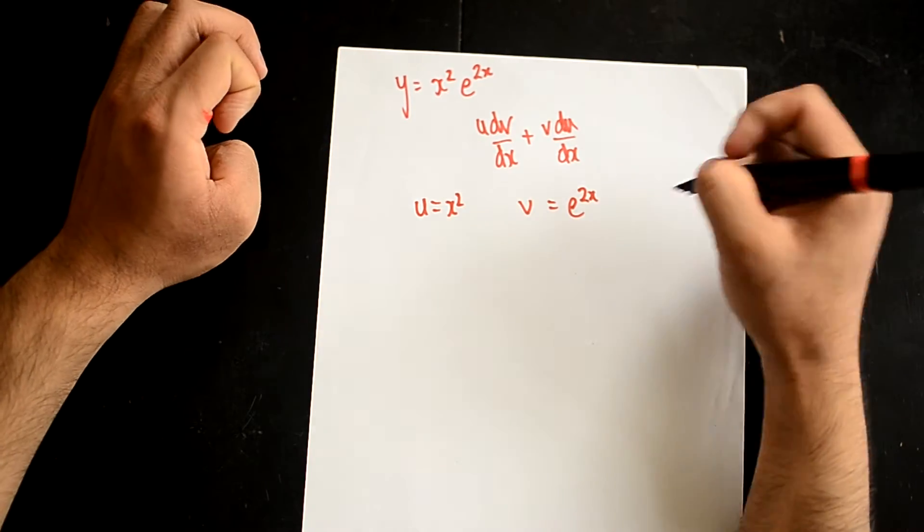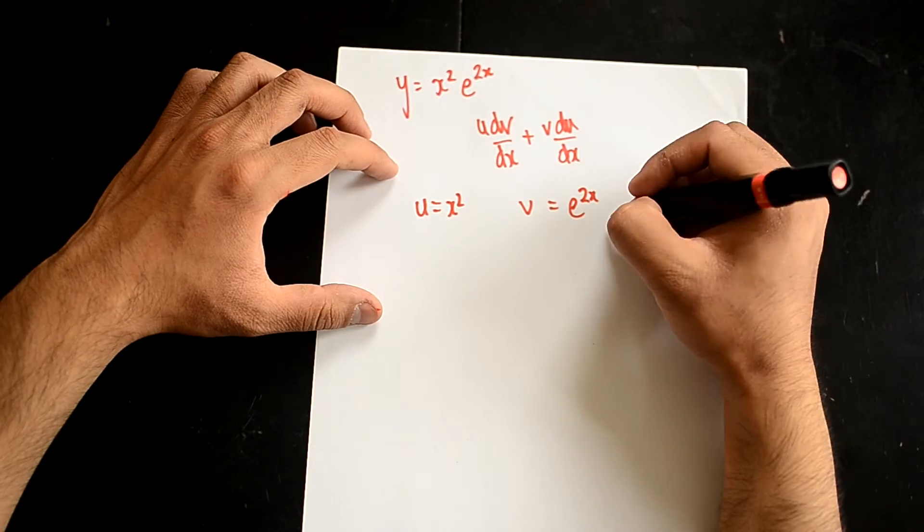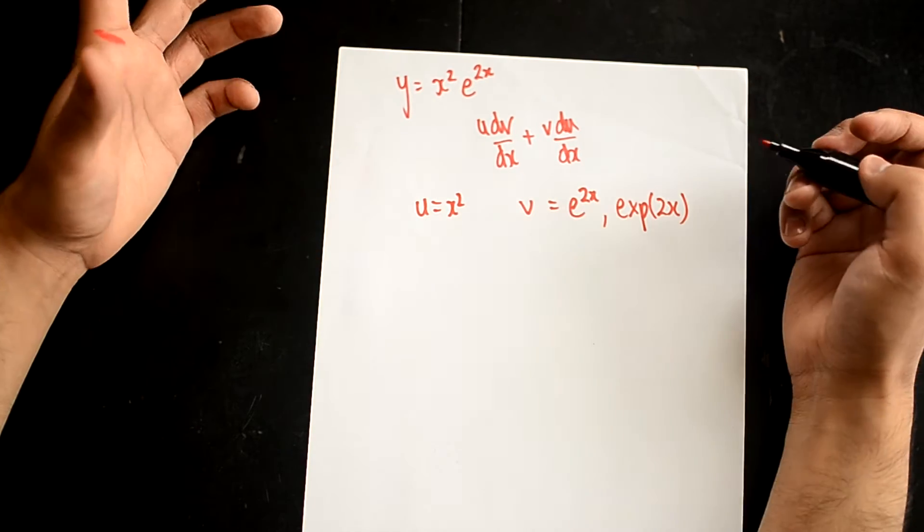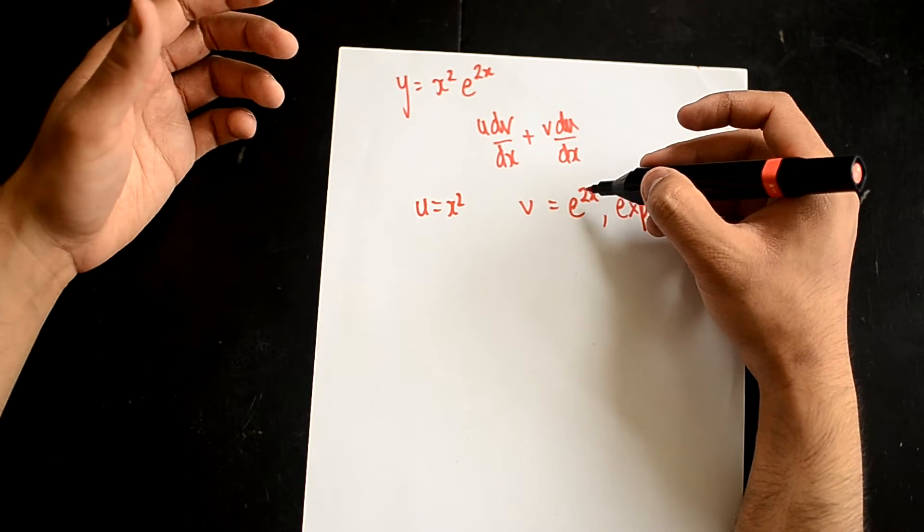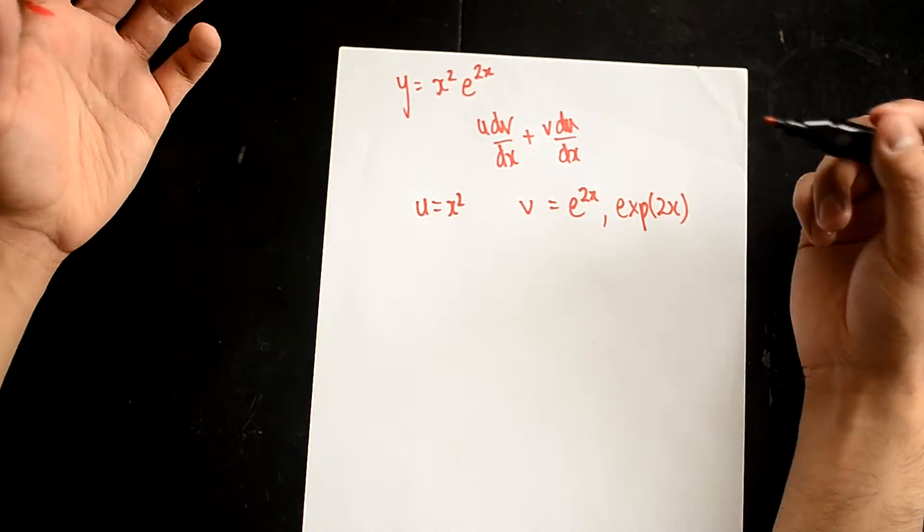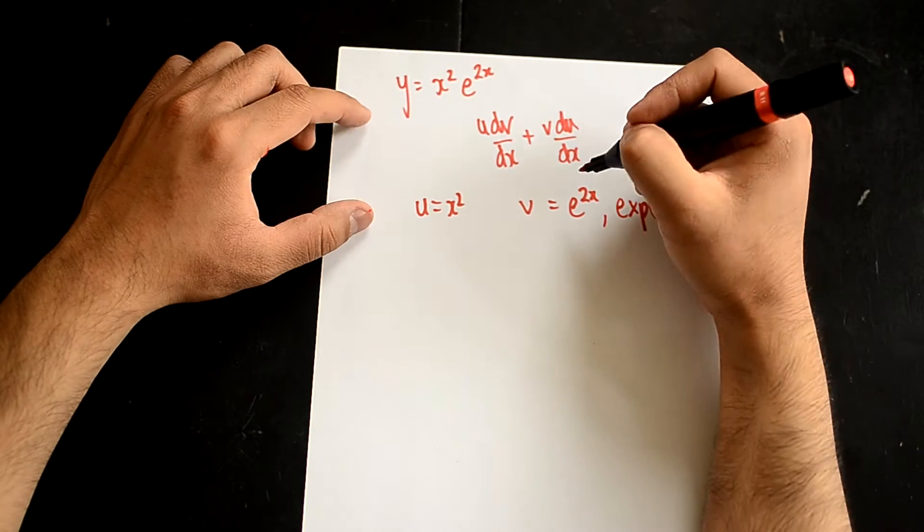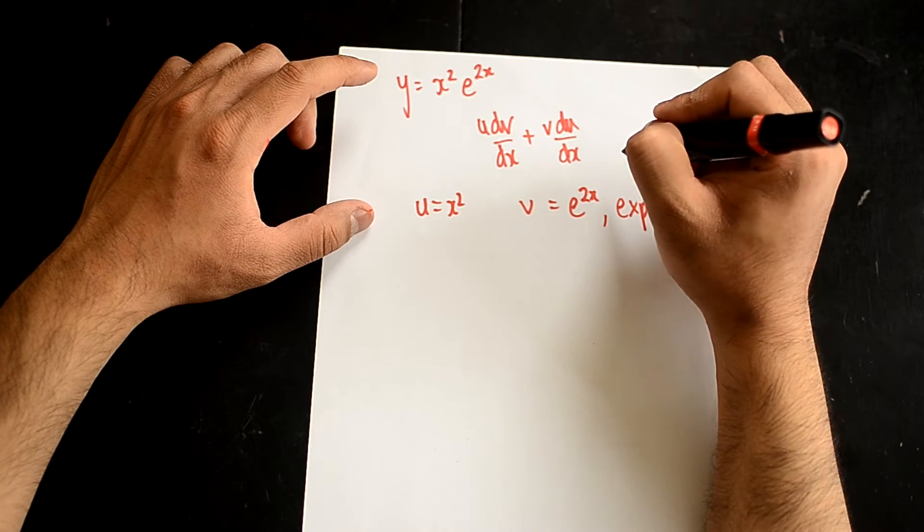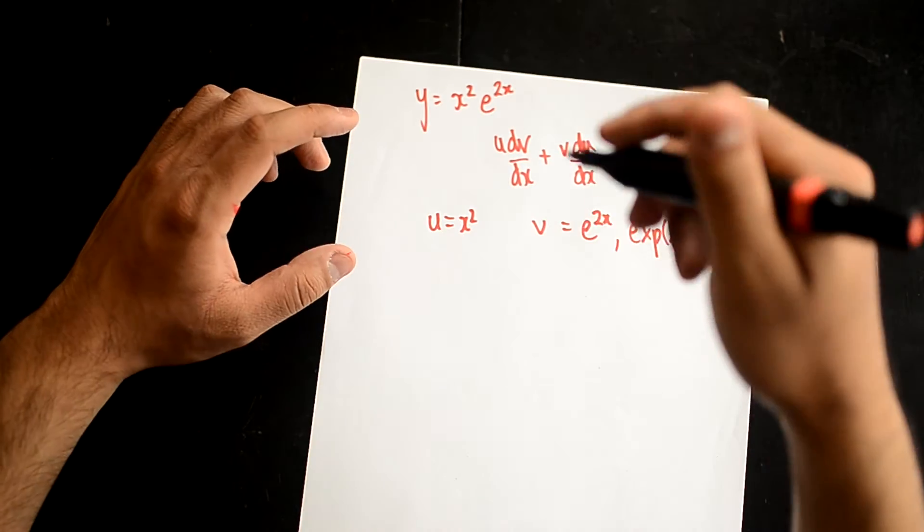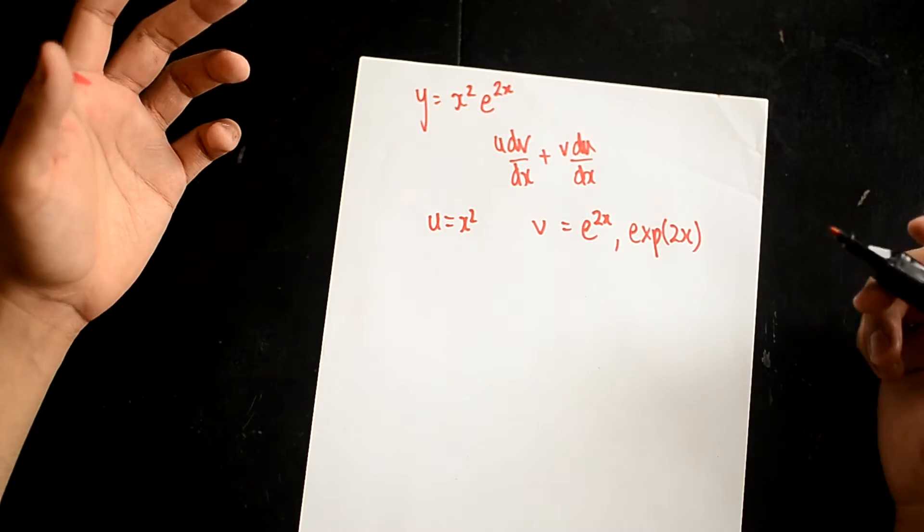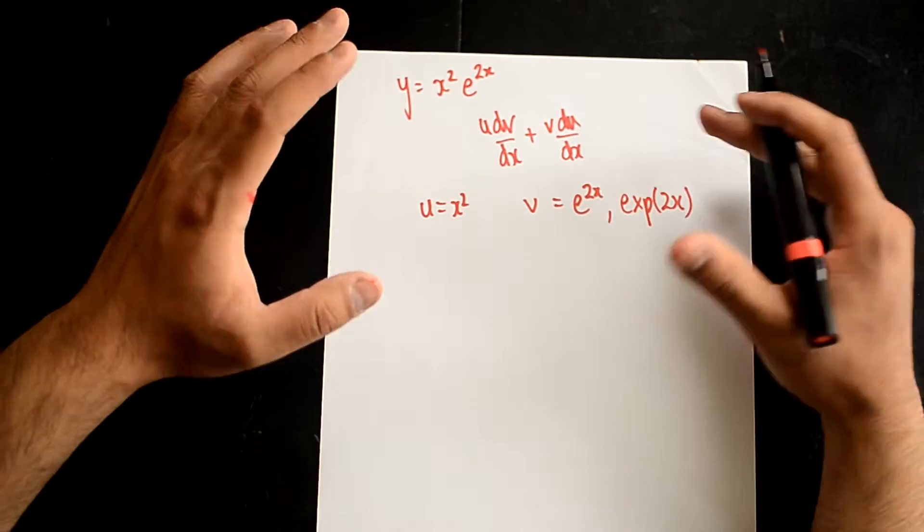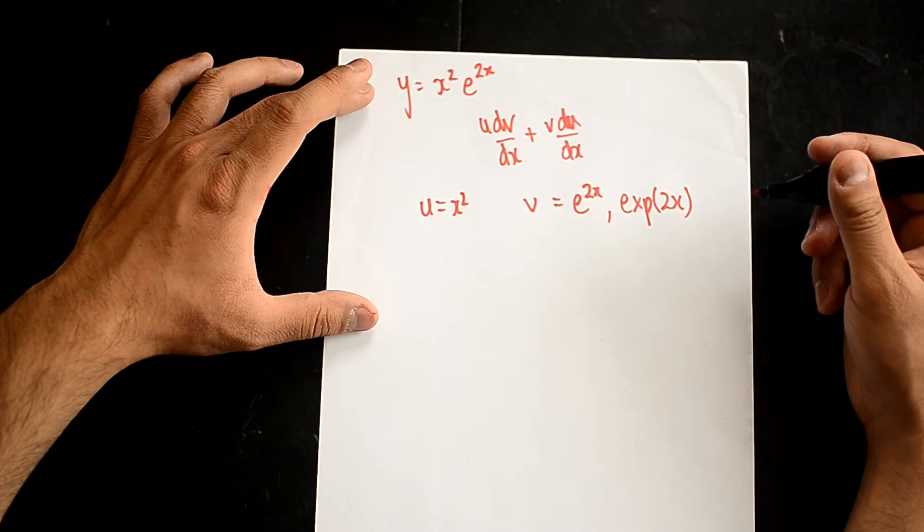Some places, I've only really seen this at university level, will write it as exponential brackets 2x. It's exactly the same thing. Some people prefer it like this. Some people like it like this. I like it like this because it reminds me that it's to the power of something. And sometimes when you've got, let's say, e to the 2x squared, you've got to try and remember it's not e2x2 or something like that, and you turn it into 4x later on. Be very careful in the way that you arrange your writing.